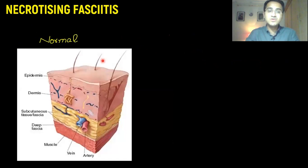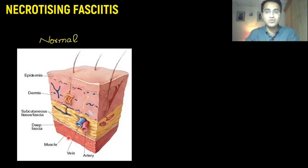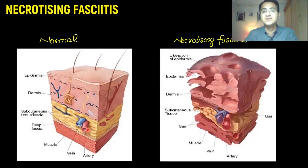Normal skin looks like this, with epidermis, dermis, subcutaneous tissue, and deep fascia, and necrotizing fasciitis destroys the whole of the skin. It usually starts from the deep fascia and spreads upwards to the skin and downwards to the muscle, destroying the whole tissue and resulting in gangrene. This is how necrotizing fasciitis looks.